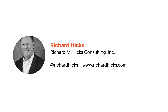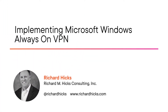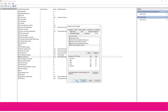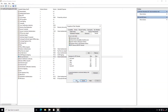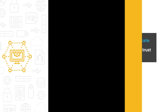Hi everyone, my name is Richard Hicks and welcome to my course Implementing Microsoft Windows Always On VPN. I'm the Founder and Principal Consultant at Richard M. Hicks Consulting. Always On VPN is the successor to Microsoft's popular Direct Access Enterprise Mobility Platform. While Always On VPN provides much of the same functionality as Direct Access, it is implemented and managed much differently.